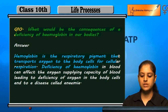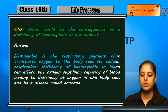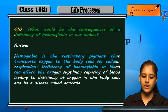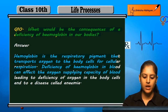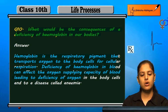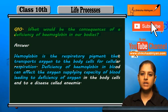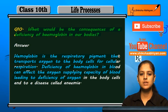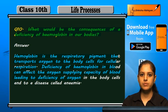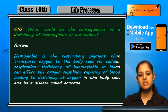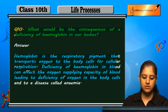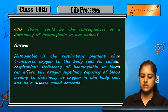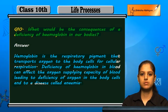Hemoglobin ki deficiency ho to kya hoga? Blood can affect the oxygen supplying capacity, leading to deficiency of oxygen. Jab hemoglobin ki deficiency hai to oxygen ka transport kama ho jayega, aur us ki wajah se body cells ke andar oxygen ki kami hone ki wajah se ek disease ho sakti hai which is called anemia.